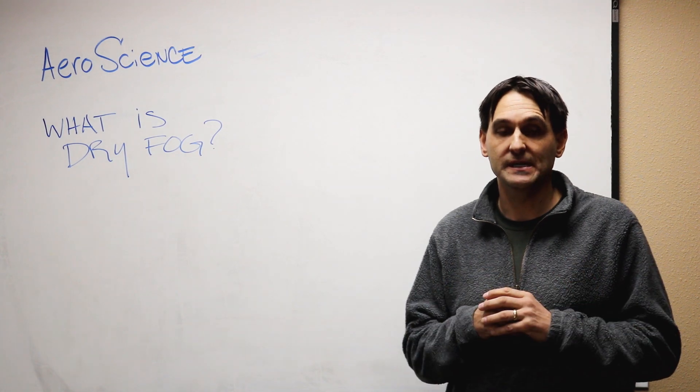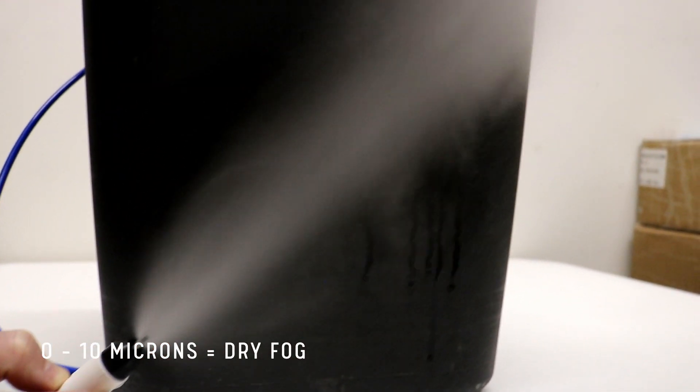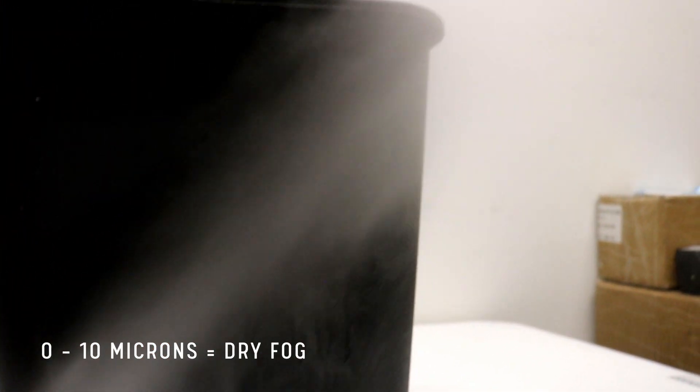It's extremely small and it evaporates. So when dry fog gets into air, it evaporates and changes the moisture content of the air. Zero to ten microns is what we focus on, that dry fog range.